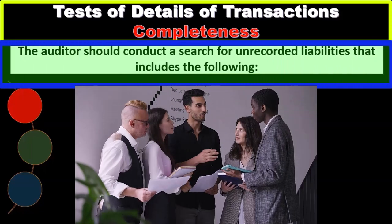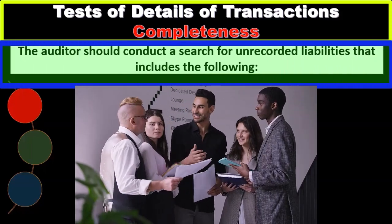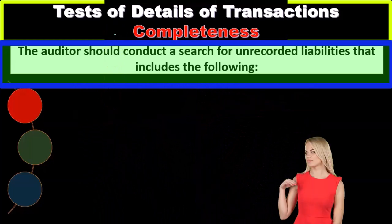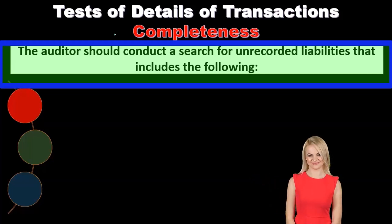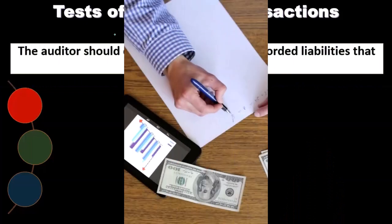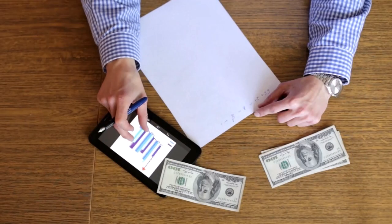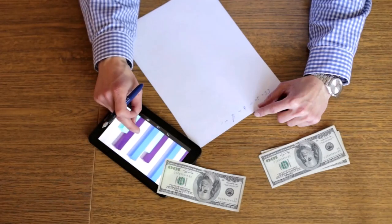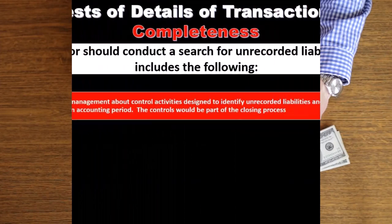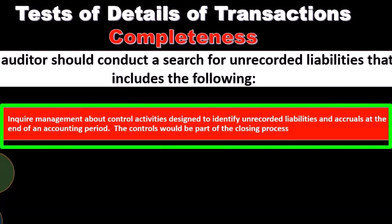Completeness is the assertion that we want to make sure everything that should have been recorded is recorded — in other words, are the financial statements complete? Are there transactions that have happened that are not reflected in the financial statements? To test for this, inquire management about control activities designed to identify unrecorded liabilities and accruals at the end of the accounting period. The controls would be part of the closing process.